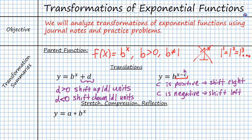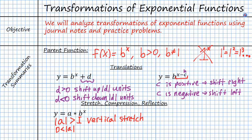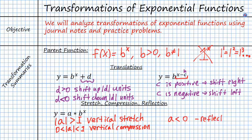Finally, we have our a values. If a is greater than 1, then it's going to be a vertical stretch. If 0 is less than a, which is less than 1, then it's going to be a vertical compression. This actually does the exact same thing as our a value did in our previous transformations. And if a itself is less than 0, then it's going to cause a reflection over the x-axis. All of these are very familiar transformations, so let's go ahead and look at some examples detailing each of these different transformations.